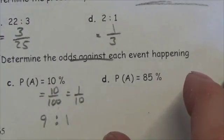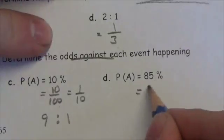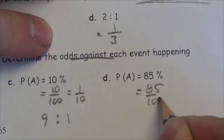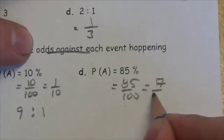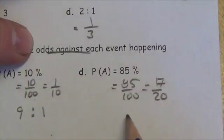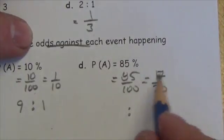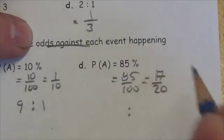Now this next one, 85%. This is the same as 85 out of 100, and that becomes 17 out of 20. What that means is we've got 17 events that can be considered successful out of a total of 20 events.